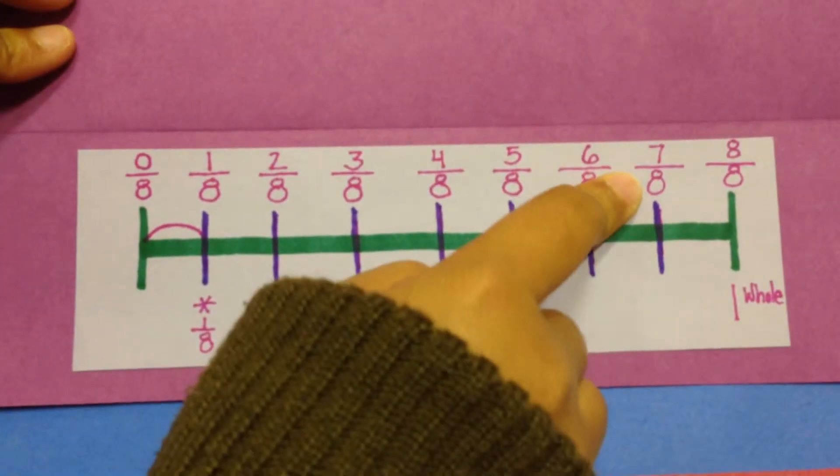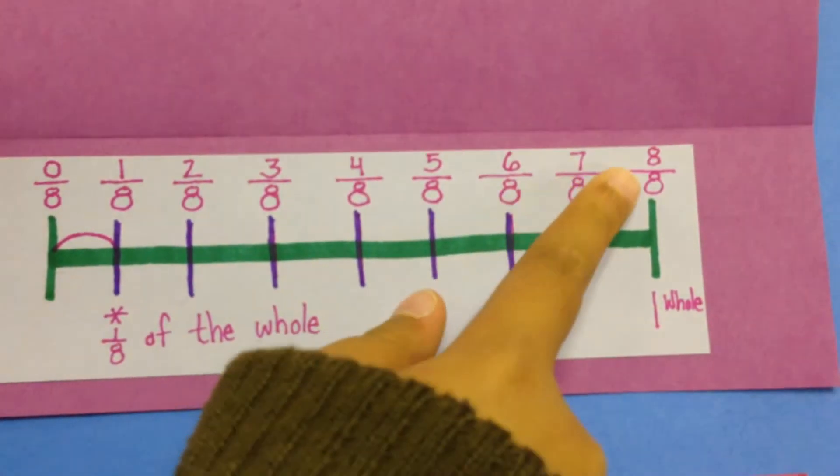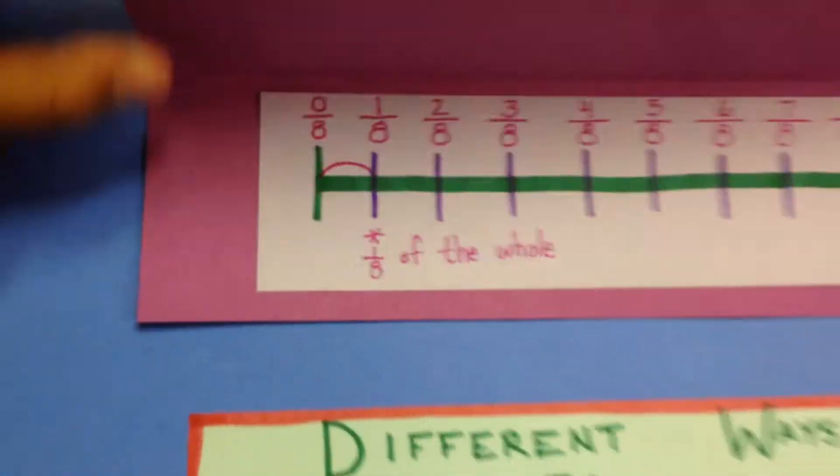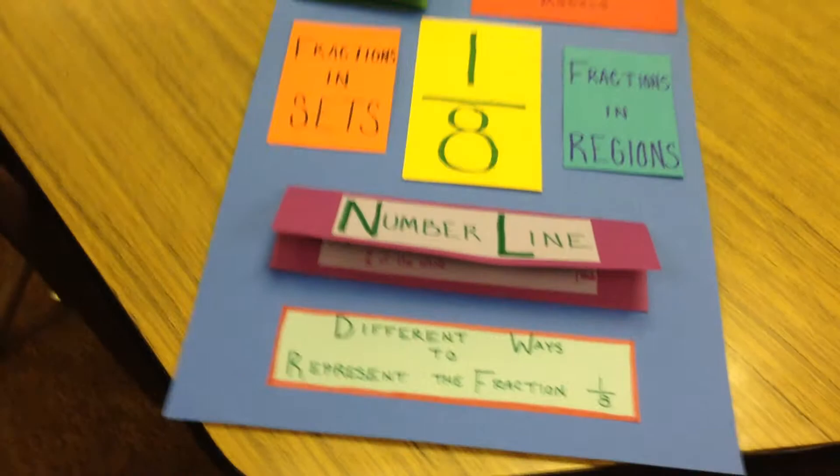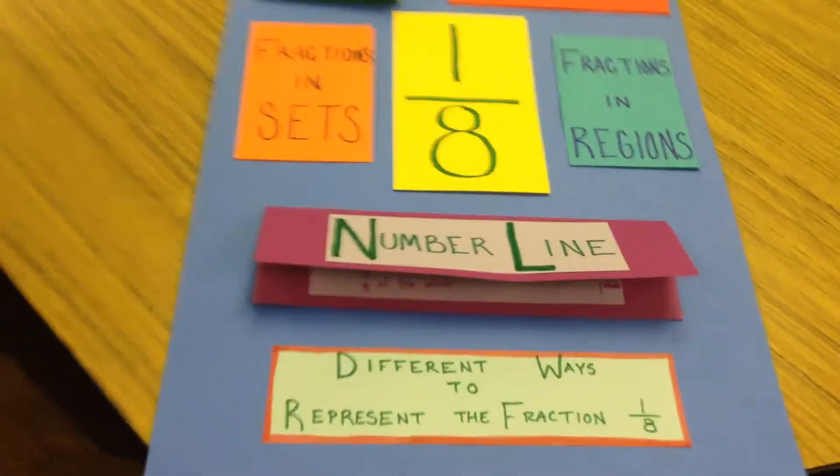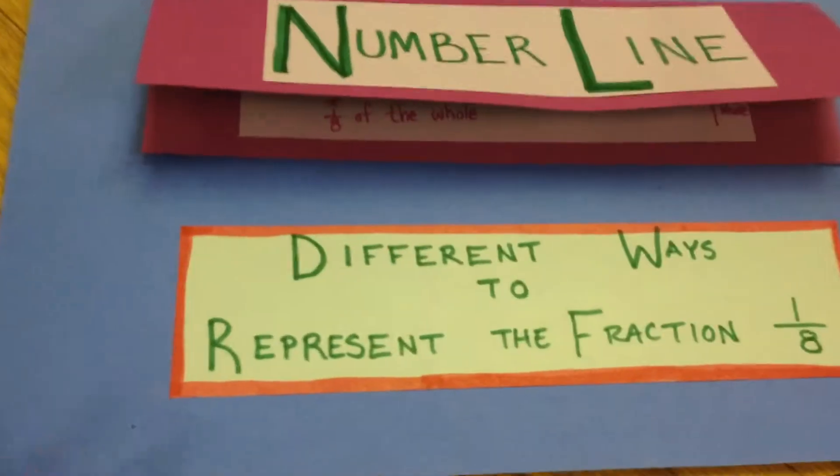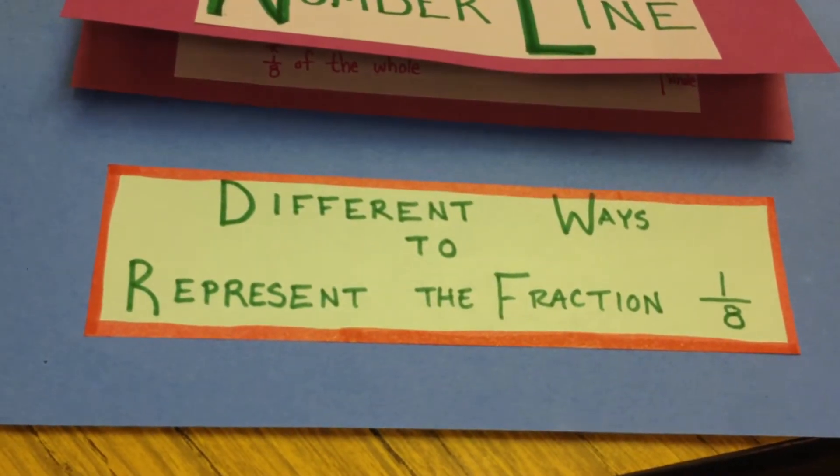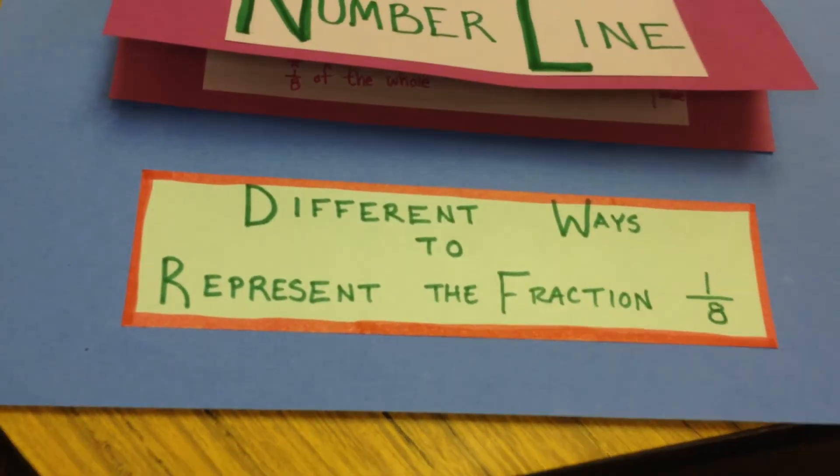Seven eighths is almost to one whole. And here, these are the different ways to represent the fraction of one eighth.